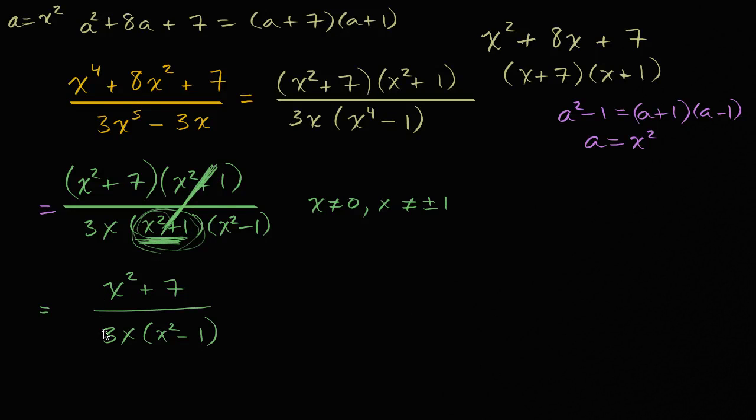so we can actually just factor it out, or cancel it out, without worrying much about it, and so this is actually algebraically equivalent to what we had originally. Now, we could write these constraints on it, if we want, if someone were to ask me, for what x is this expression not defined?